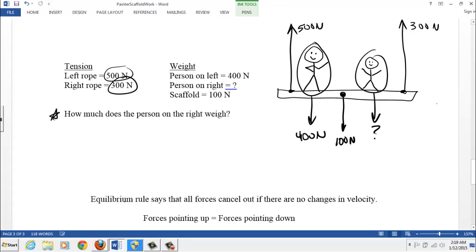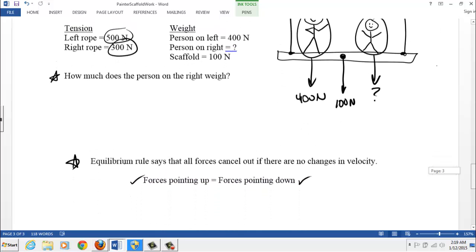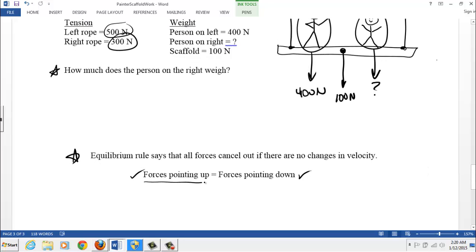The scaffold itself weighs 100 newtons, and so there's the question: how much does the person on the right weigh? Well, the equilibrium rule says that all forces cancel out, there's no changes in velocity. So that's going to be the assumption, we're going to say everything's at rest again and stays at rest. In which case, the forces pointing up balance and cancel out the forces pointing down.